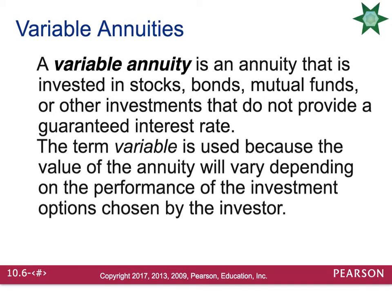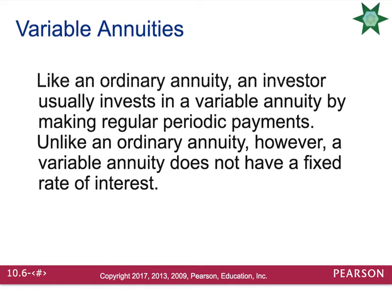There are many other annuities. A variable annuity is an annuity that is invested in stocks, bonds, mutual funds, or other investments that do not provide a guaranteed interest rate. The term variable is used because the value of the annuity varies depending on the performance of the investment options. Like an ordinary annuity, an investor usually makes regular periodic payments, but unlike an ordinary annuity, a variable annuity does not have a fixed rate of interest.